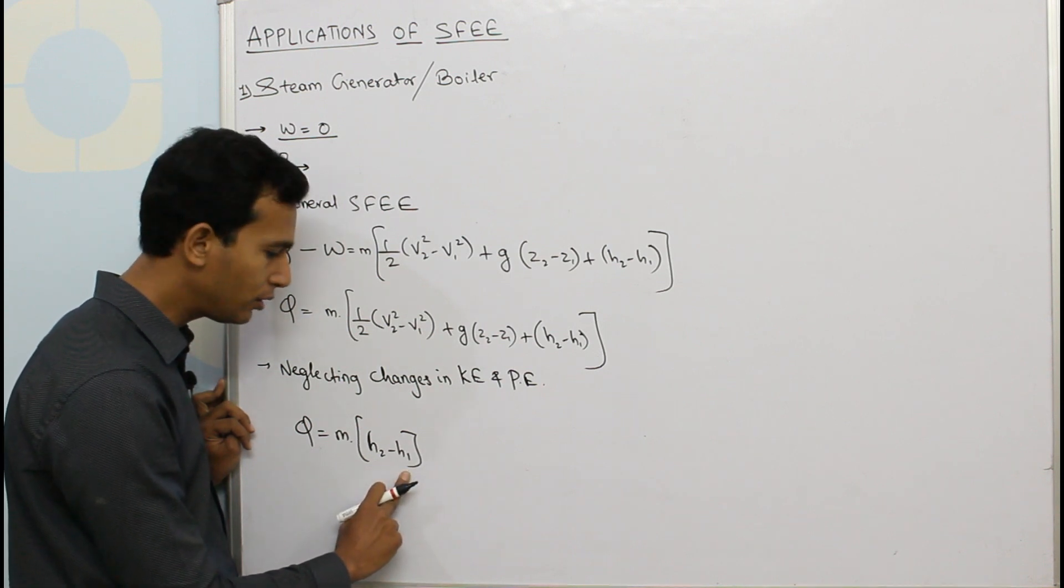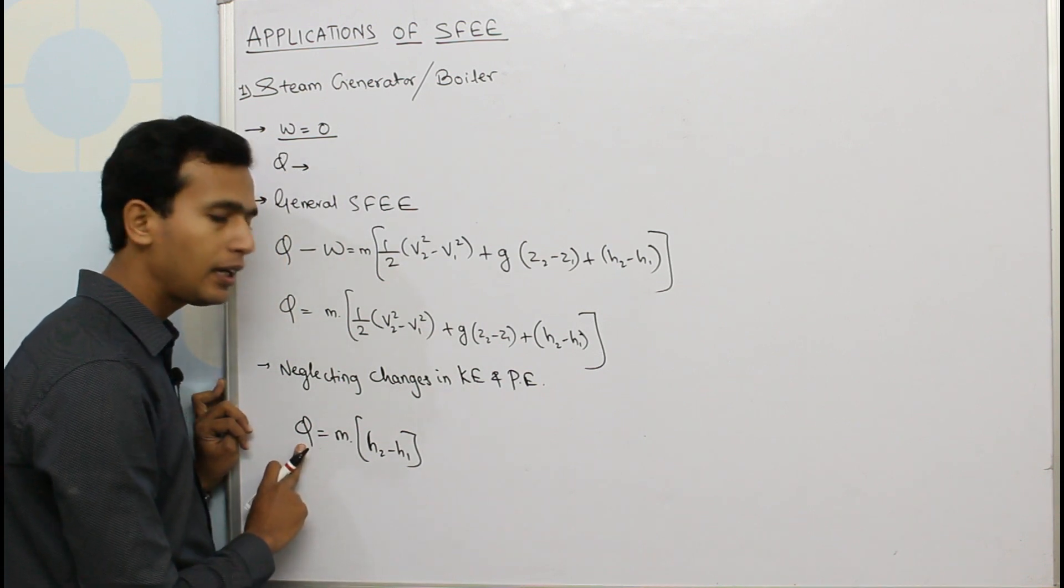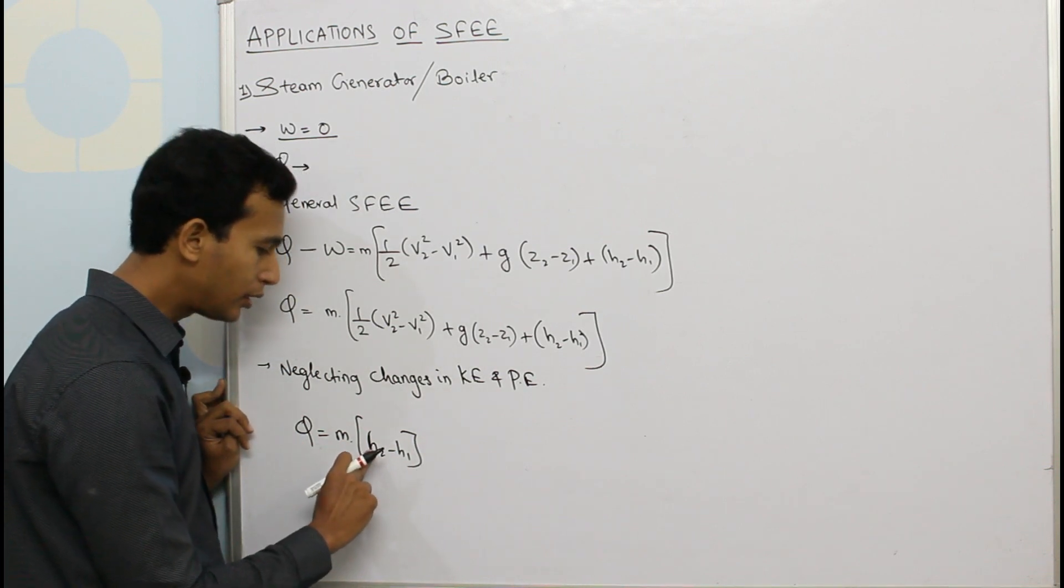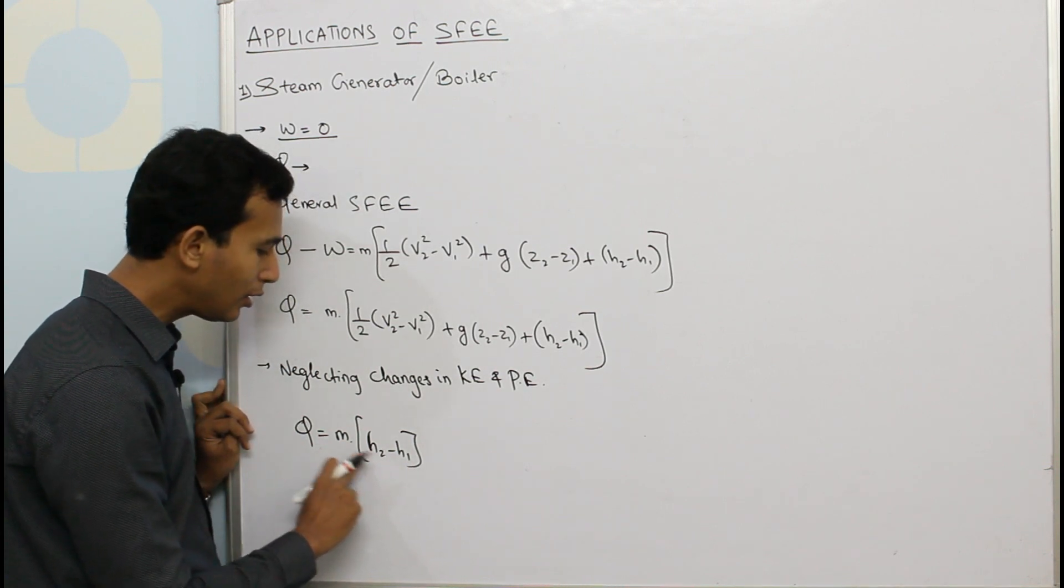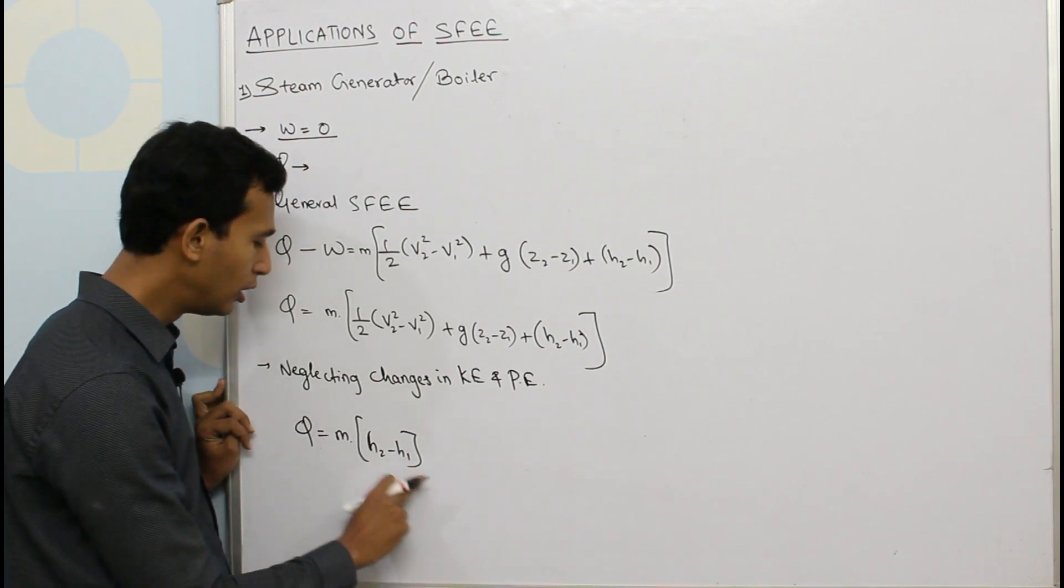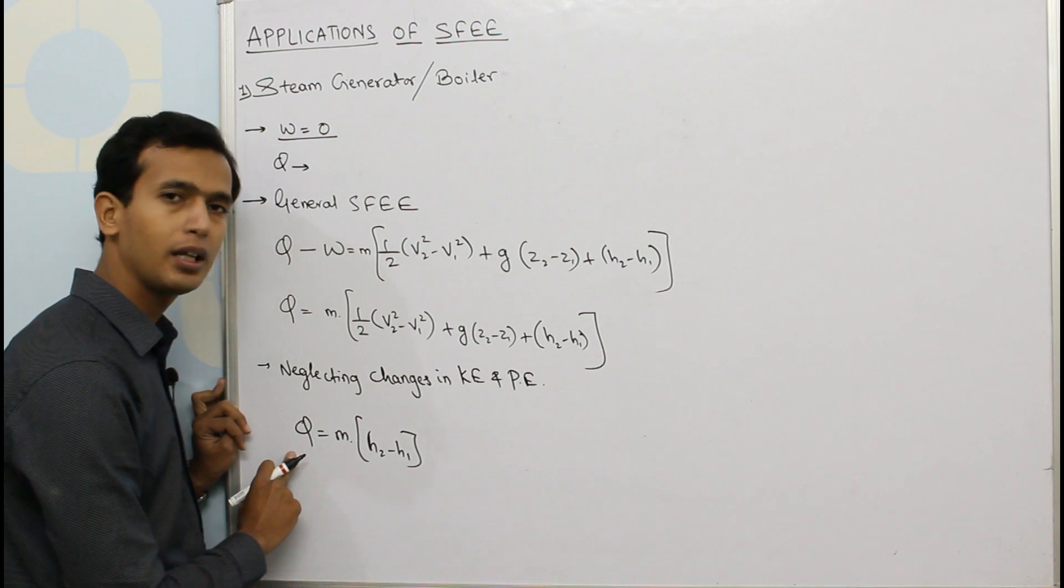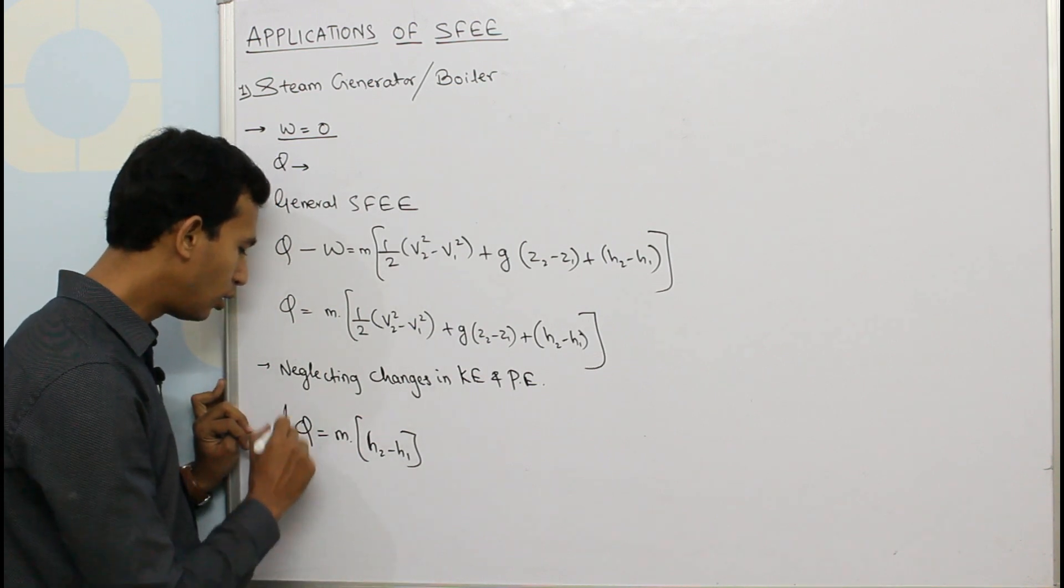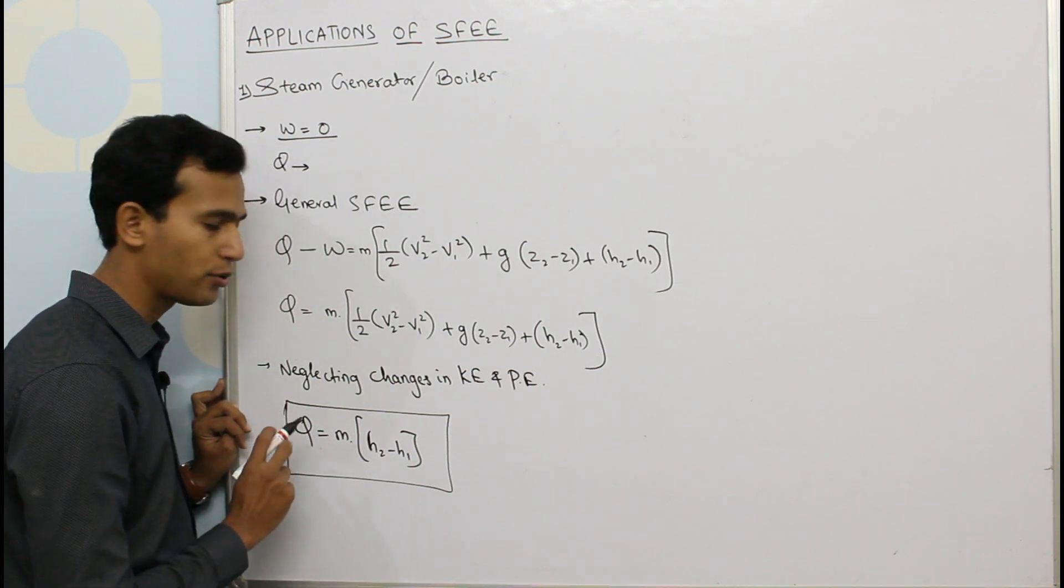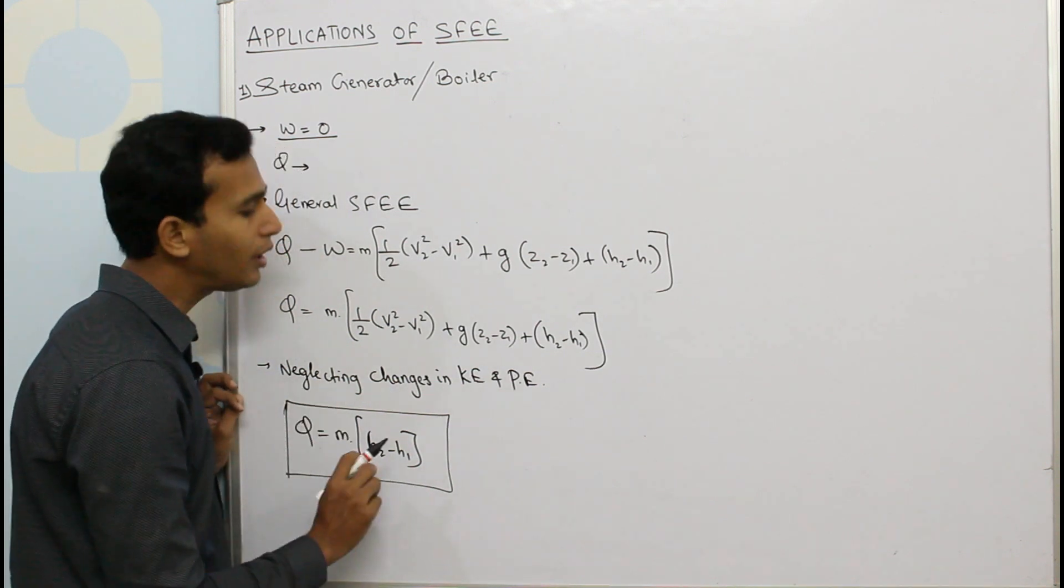That means this supplied heat increases the value from H₁ to H₂—that is the only possibility which will give you this term positive. So whatever heat is supplied in a boiler is used to increase the enthalpy of the water in order to convert it into dry and saturated steam.